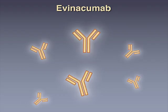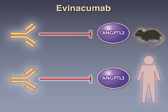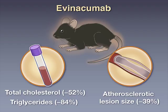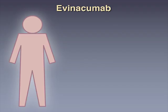A monoclonal antibody called evinacumab, which inhibits both mouse and human angiopoietin-like 3, was used to treat mice with dyslipidemia. Investigators found significantly lower average total cholesterol and triglyceride levels, as well as a greater decrease in atherosclerotic lesion size in mice treated with evinacumab than in mice treated with a control antibody.